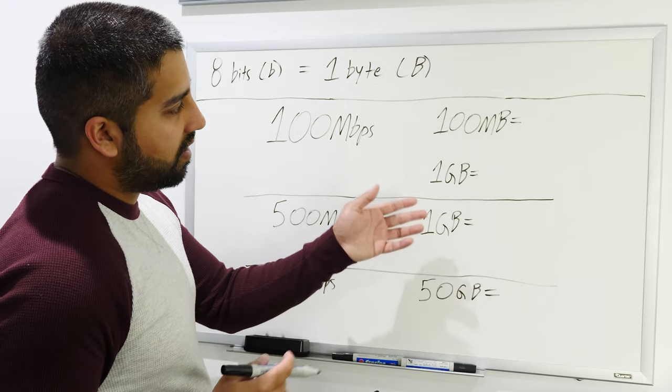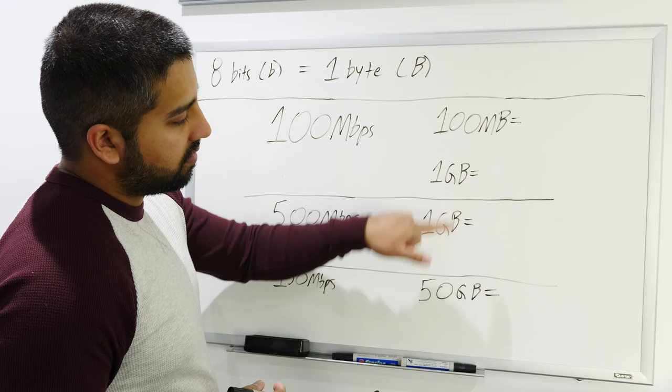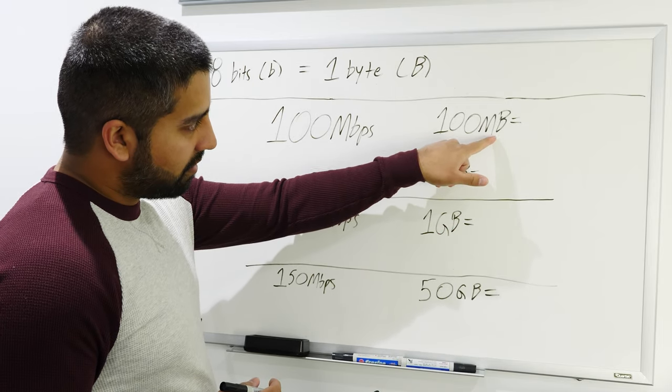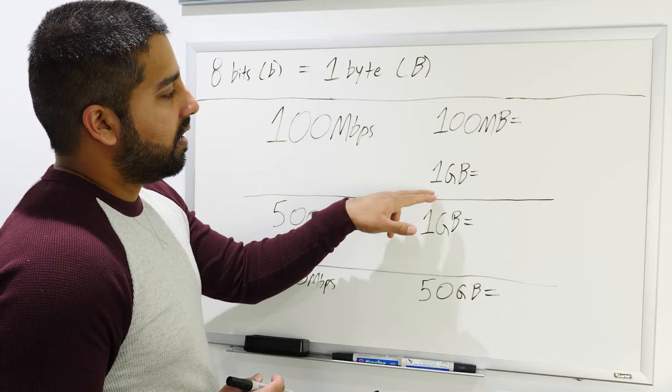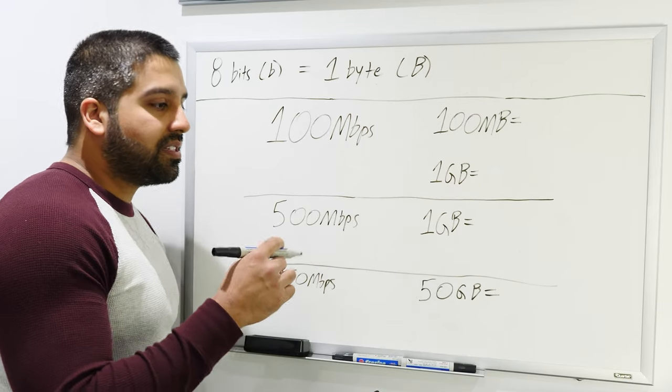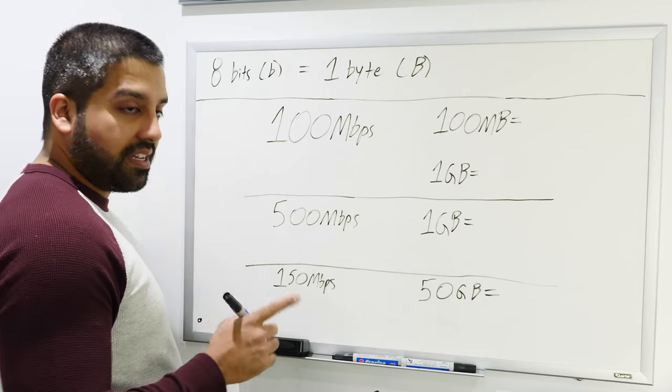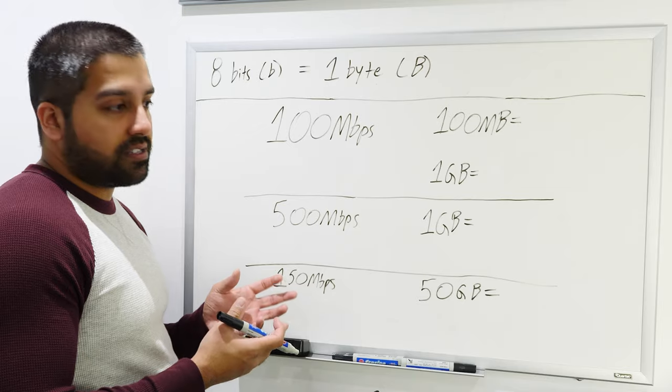So on this column on the right, I have hypothetical file sizes. You'll notice it's capital B, capital B, capital B. So if it's 100 megabytes, well, it's a capital MB. If it's one gigabyte file, well, capital B. Same with one terabyte, so on and so forth, always capital B.